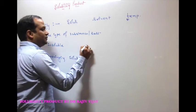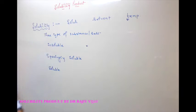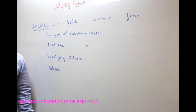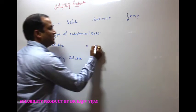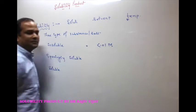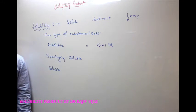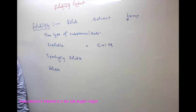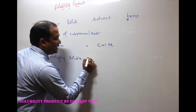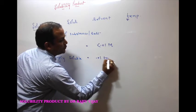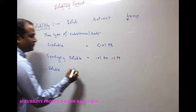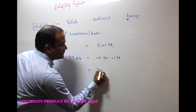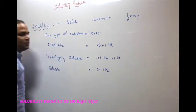When the solubility at a given temperature is less than 0.01 molar, the salt is insoluble. It is sparingly soluble if solubility ranges from 0.01 to 0.1 molar. And it is completely soluble if solubility is greater than 0.1 molar.